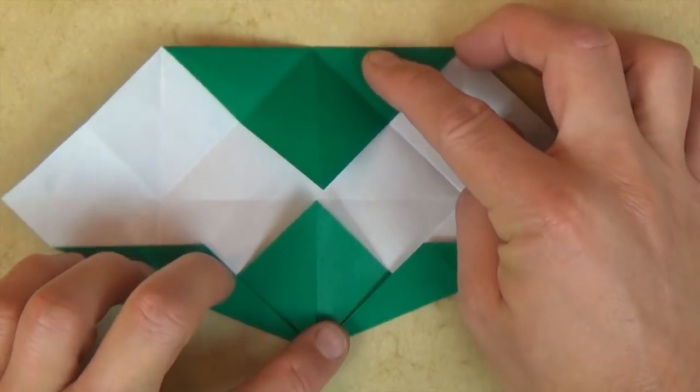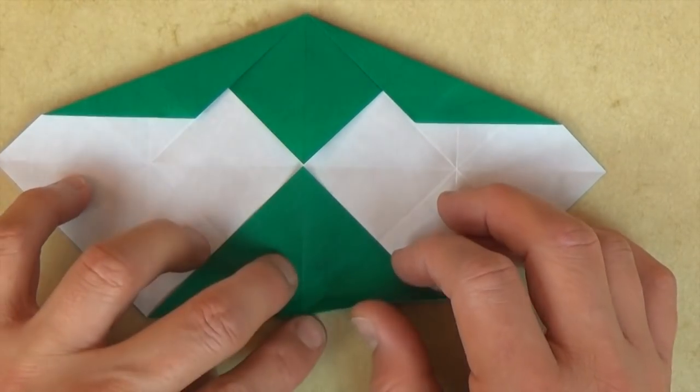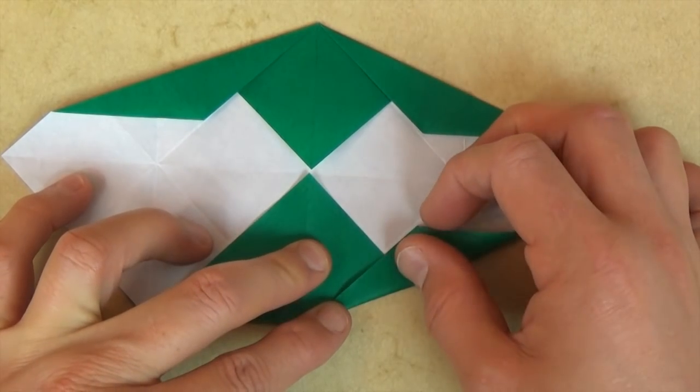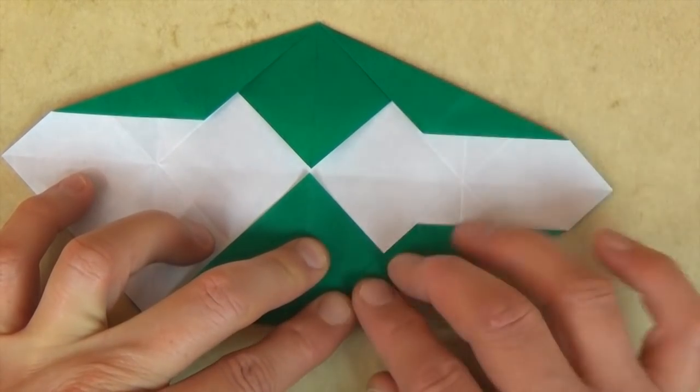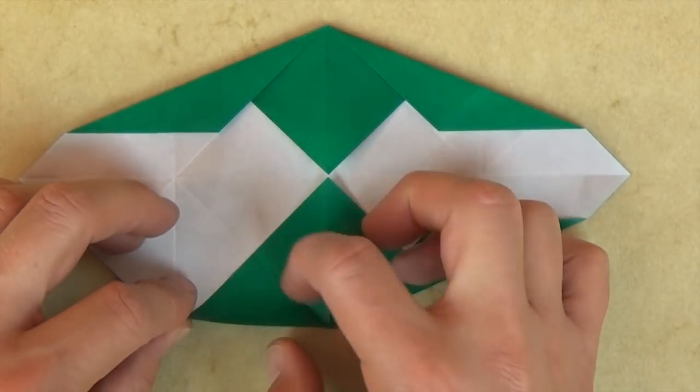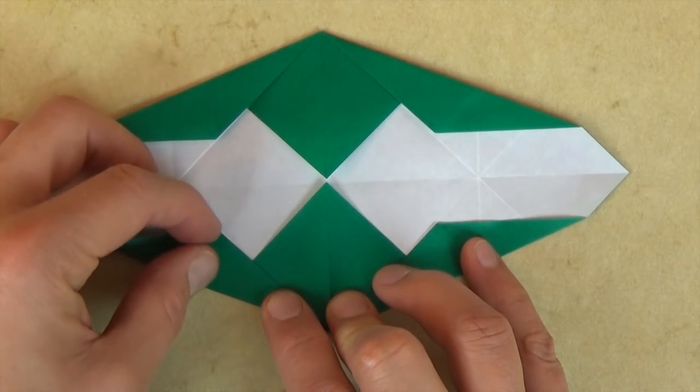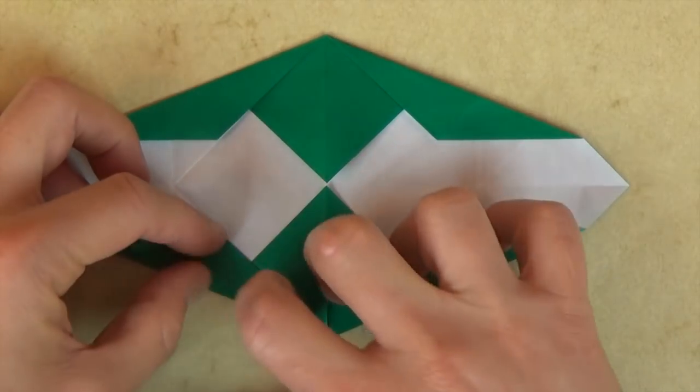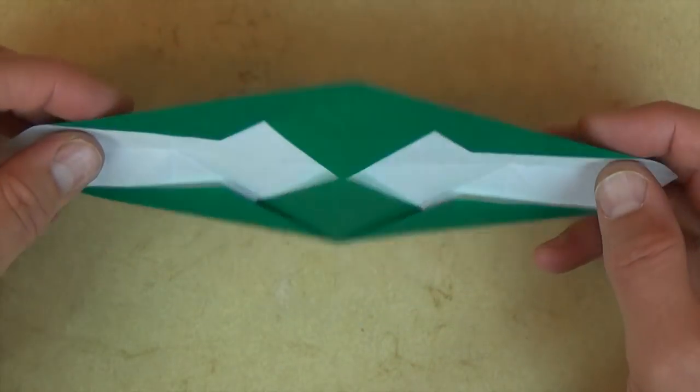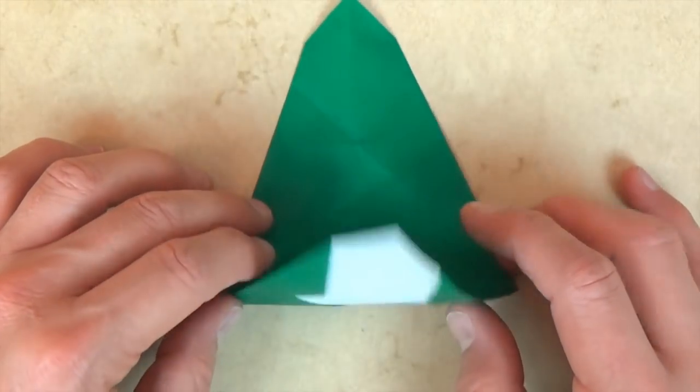Okay, and let's rotate 180 degrees and repeat on this side. So let's fold this edge to this crease, and let's fold this edge to this crease. Now let's turn over top to bottom and rotate 90 degrees and fold in half.